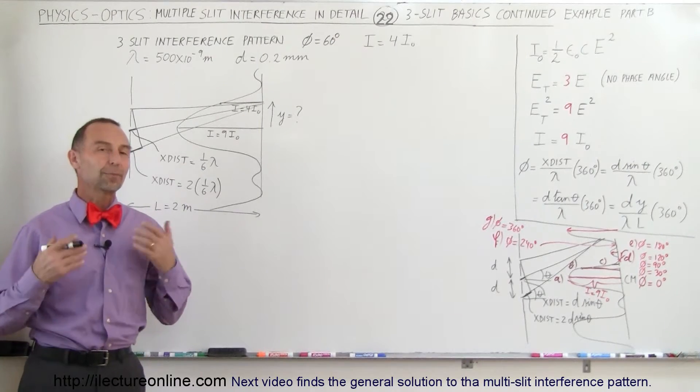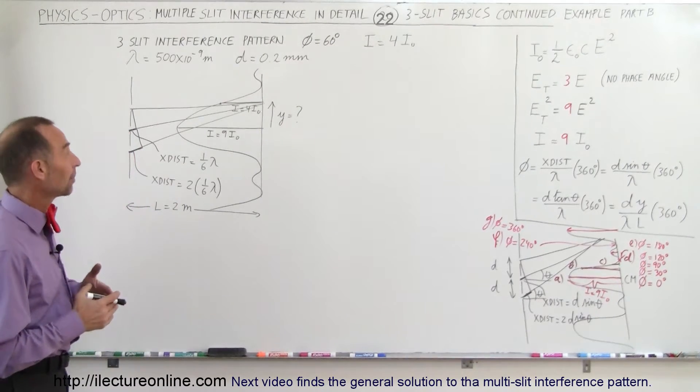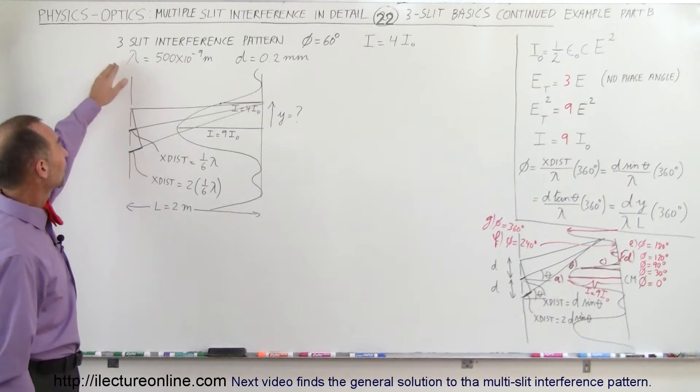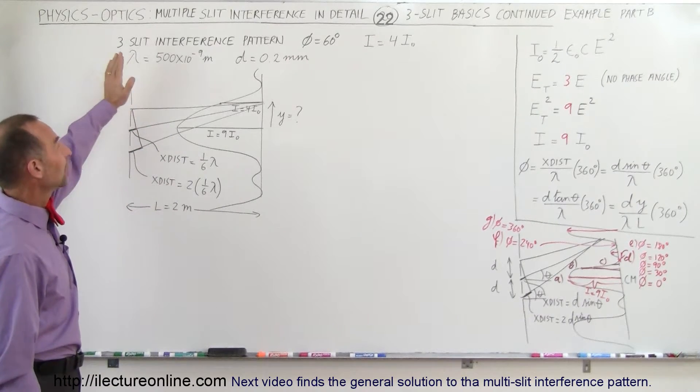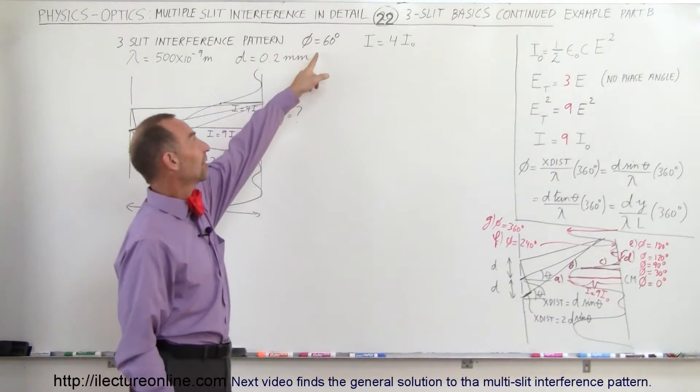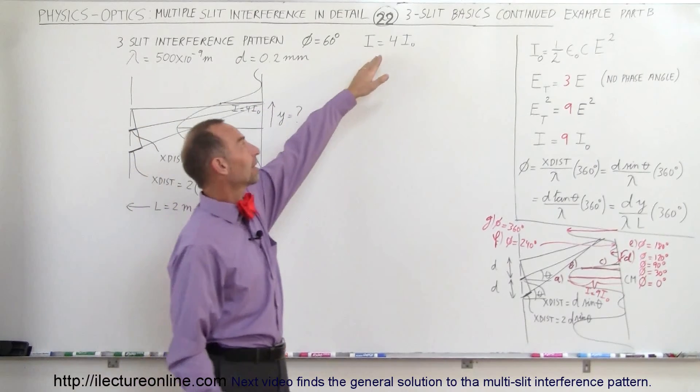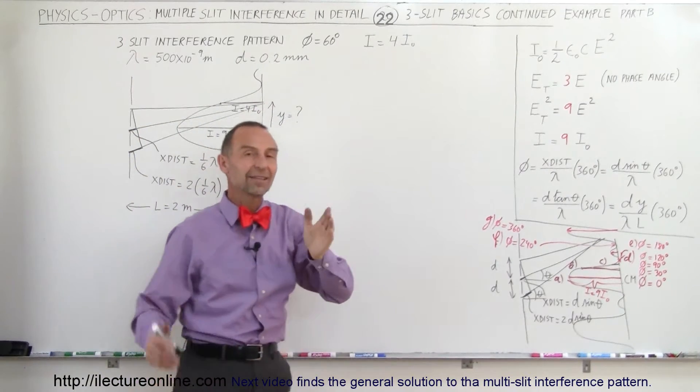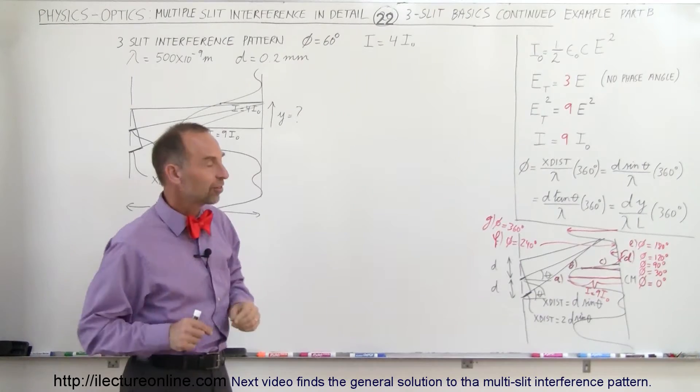Welcome to ElectronLine. Here's part B of our example. In the previous example, we showed you when we had a situation with three slits, we have an interference pattern where the phase angle difference was 60 degrees and we found that the intensity was four times the intensity of the single slit intensity.